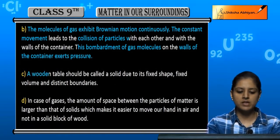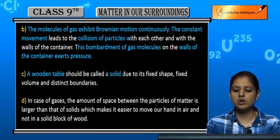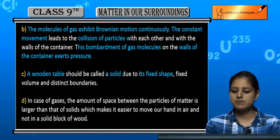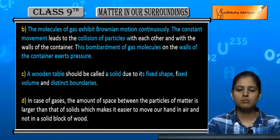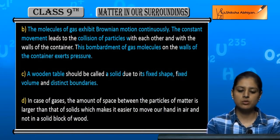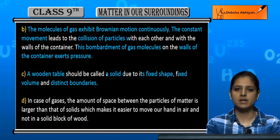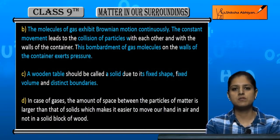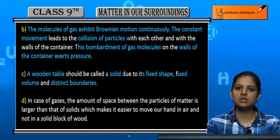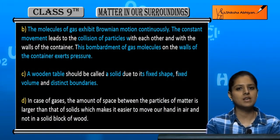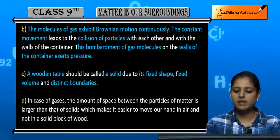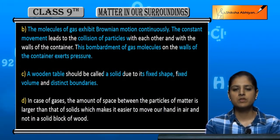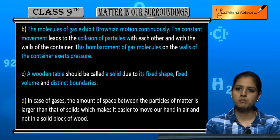Second: why do we call a wooden table a solid? Because it has a fixed shape, fixed volume, and distinct boundaries. These are the properties of a solid. Since the wooden table has a fixed shape, fixed volume, and distinct boundaries, that is why we call it a solid.